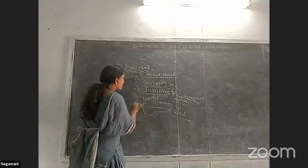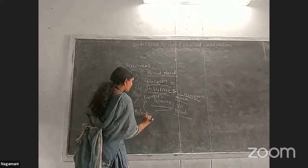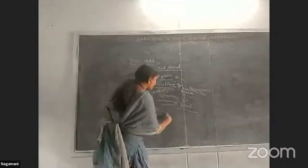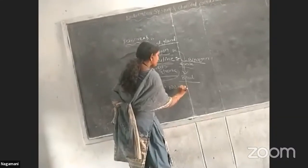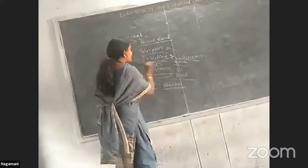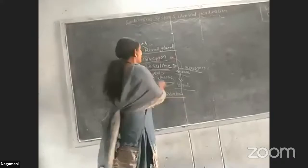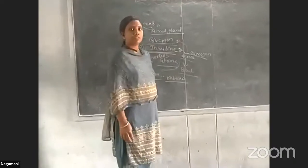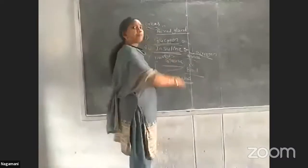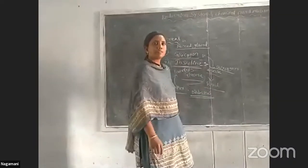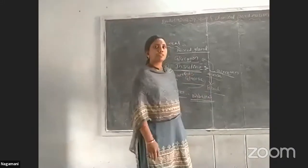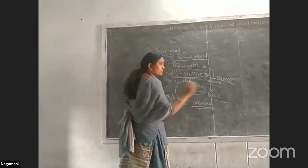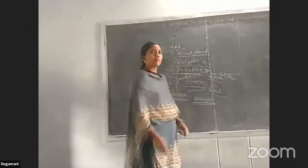What are the disorders due to hypo or hypersecretion of these hormones? The well-known disease is diabetes. When insulin is low in the blood, excess glucose accumulates in the blood — this condition is called diabetes, also known as sugar disease. These are the major hormones from the pancreas and their abnormal conditions.